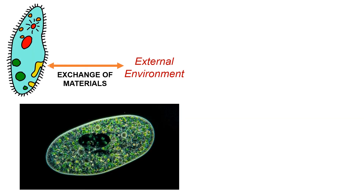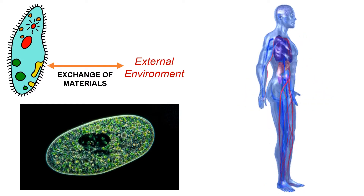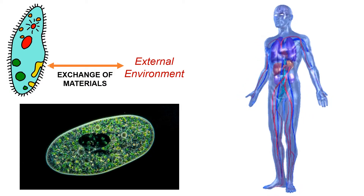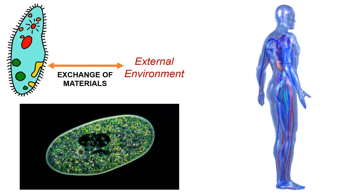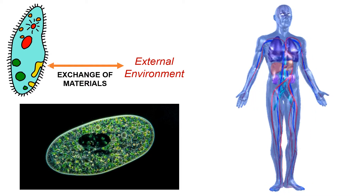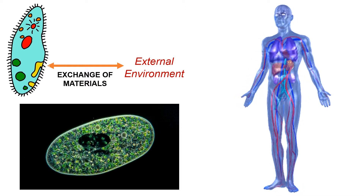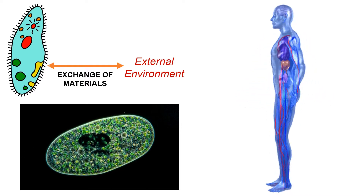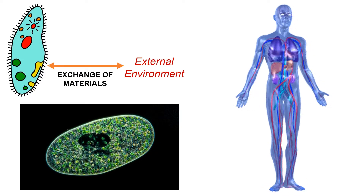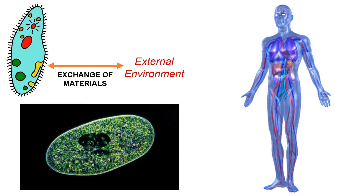In single-celled organisms, exchange of materials occurs directly with the external environment. However, multicellular animals cannot exchange materials this way. Instead, various organ systems perform the functions of exchange. The different parts and organs of each organ system play a vital role in keeping animals alive.